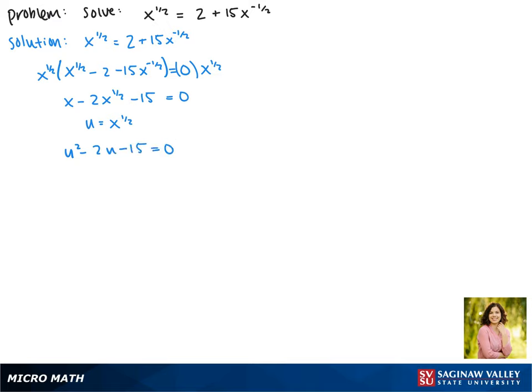So now we can factor this. The factors of negative 15 that make negative 2 are negative 5 and positive 3. Now we take turns setting each one equal to 0. This gives us u minus 5 equals 0 or u plus 3 equals 0.